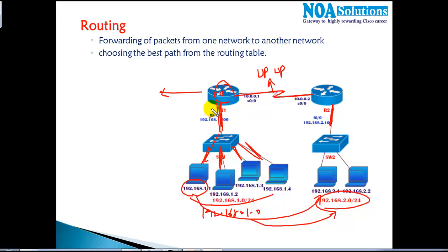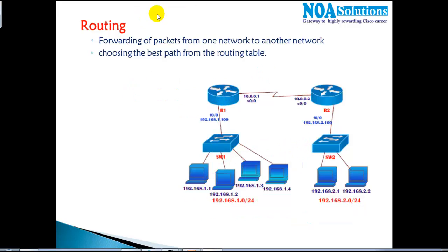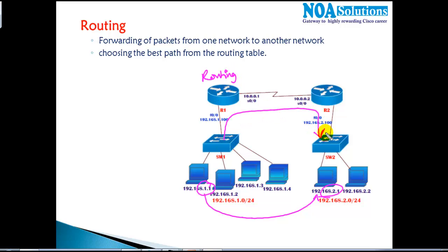There is one more thing we need to configure — something called routing. We need to ensure routing is configured on this router in order to forward packets from one network to another. Routing is the process of establishing communication between two or more different networks. It can be in the same location or in different locations.